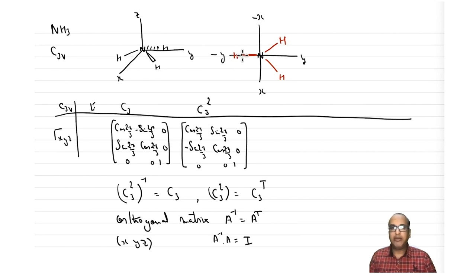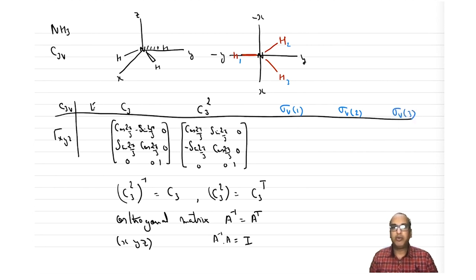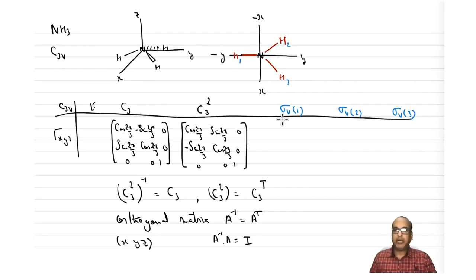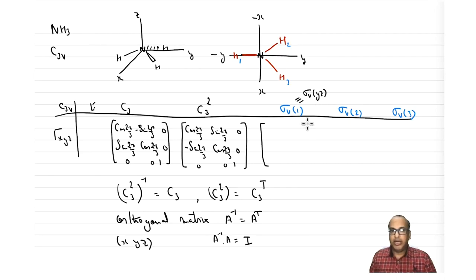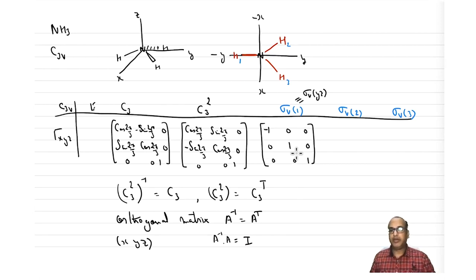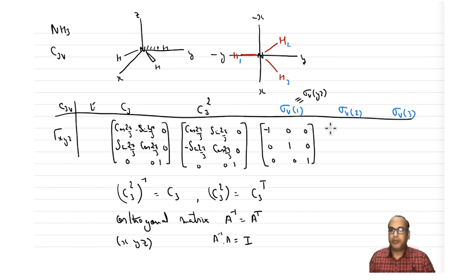Now let us write σ for NH3. There are σ_v1, σ_v2, and σ_v3. For σ_v1, which lies along the yz plane, it is equivalent to σ(yz). Only x becomes negative, giving: −1, 0, 0 / 0, 1, 0 / 0, 0, 1. That one is easy.